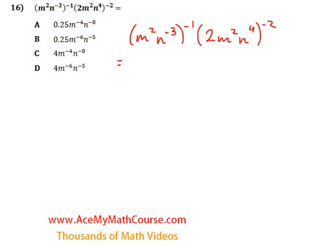First step, let us just expand, or actually essentially just apply the negative 1 to all elements inside the parenthesis here. m squared to the negative 1 is just m to the negative 2, because 2 times negative 1 is negative 2. Now, n to the power of negative 3 to the negative 1, negative 3 times negative 1 is just 3.